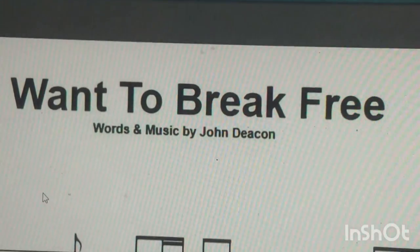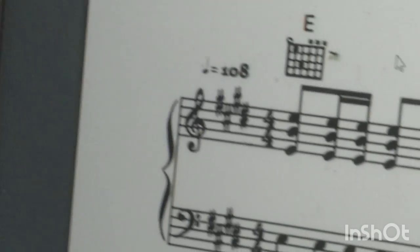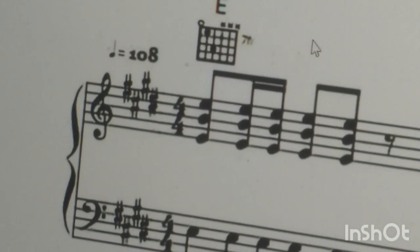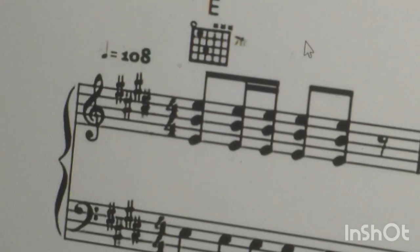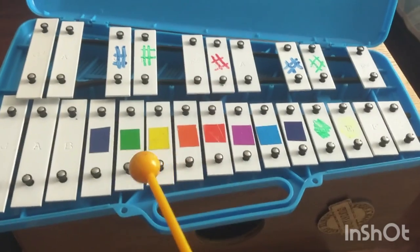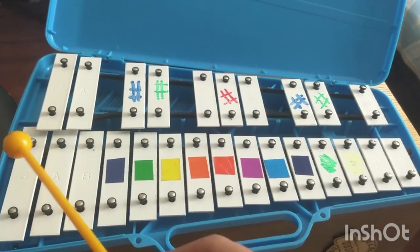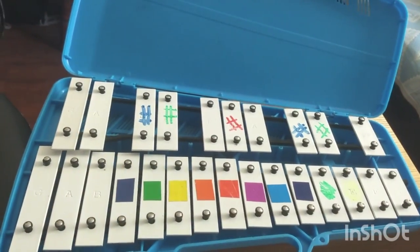I want to break free by Queen. En este caso, las alteraciones que nos presenta la partitura corresponden a la tonalidad de Mi Mayor. Por favor, toca esto conmigo. En este repertorio tenemos que utilizar todo el metalófono.